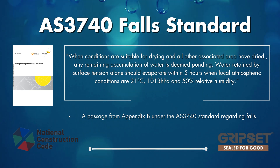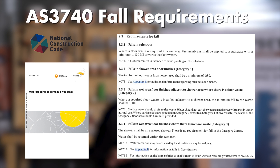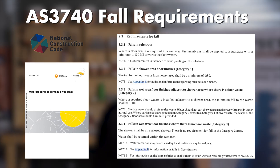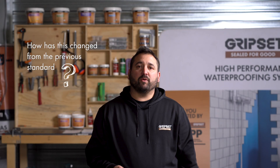To understand how the standard specifically addresses falls, we need to turn to page 8. The requirement and scope for falls are detailed under three categories ranked on criticality for drainage. Category 1 relates to falls in shower floor finishes — this is considered the most critical area and a fall of minimum 1 in 80 is required. Requirements for Category 2 and Category 3 areas are listed respectively.